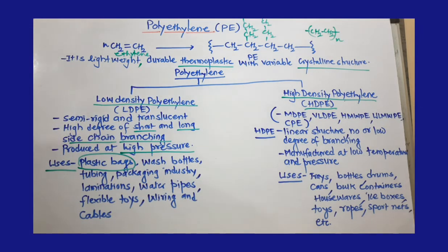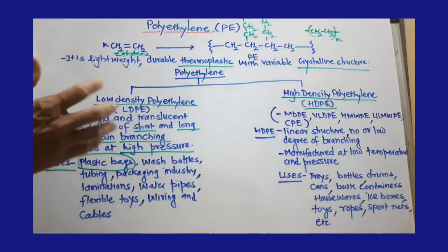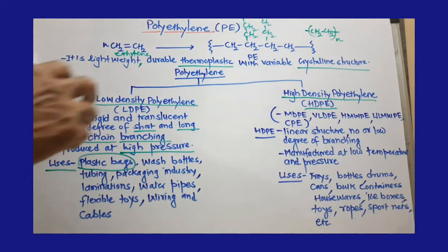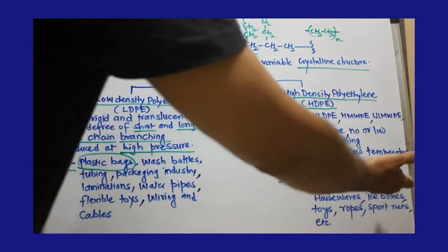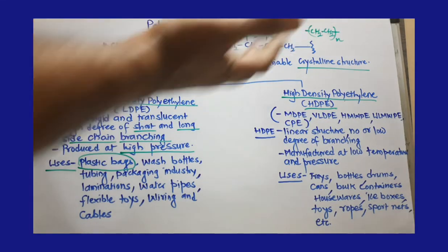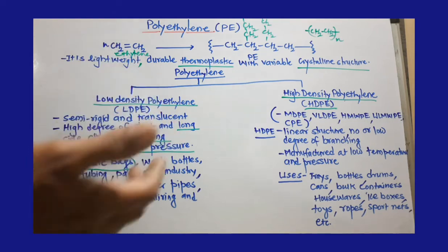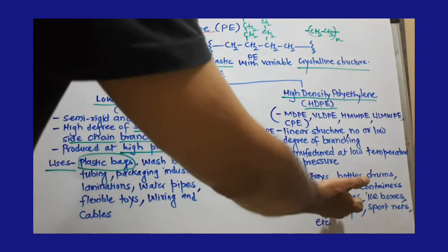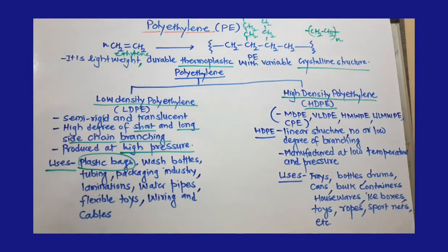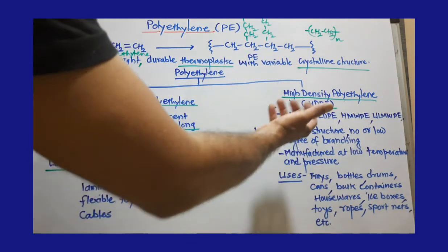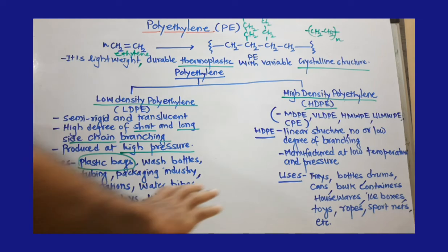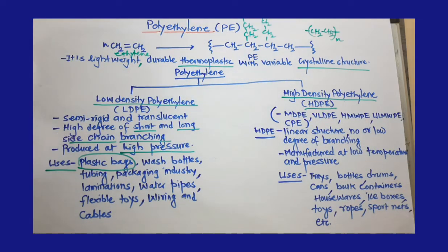HDPE is used for trays and bottles, and it is rigid compared to low density polyethylene. You can prepare drums, big cans, or bulk containers for chemicals, different housewares, ice boxes, and tough rigid toys. Because of its high tensile strength, ropes and sports or snow sports nets are also prepared from HDPE. That is all about polyethylene — thank you so much.